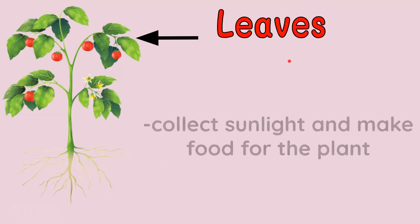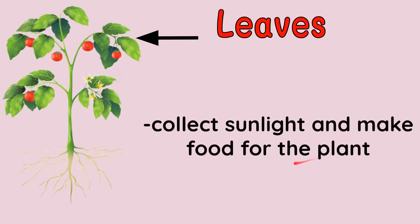Now let's go to the leaves. The leaves collect sunlight and make food for the plant. The leaves collect sunlight and make food for the plant. This is where the process of photosynthesis takes place. The cooking of the food of the plant happens in the leaves through the process of photosynthesis. We'll have a separate lesson for that.